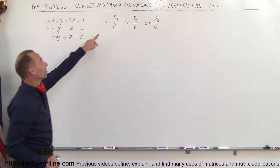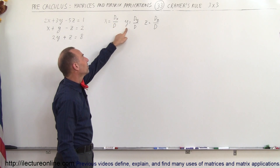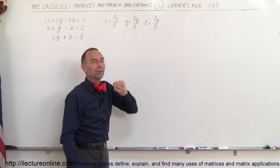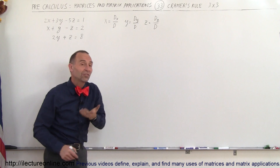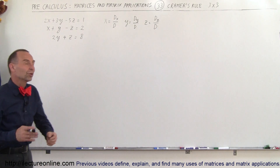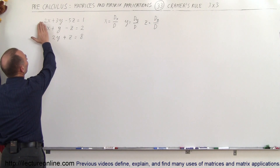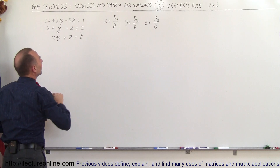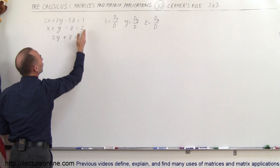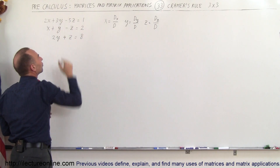We can find the x variable by taking d sub x divided by d, y is equal to d sub y divided by d, and z equal to d sub z divided by d. D, d sub x, d sub y, and d sub z are determinants. We're going to calculate the determinant of the coefficients of the x, y, and z variables, and then do it again when we replace the x coefficients, y coefficients, and z coefficients by the constants 1, 2, and 8.